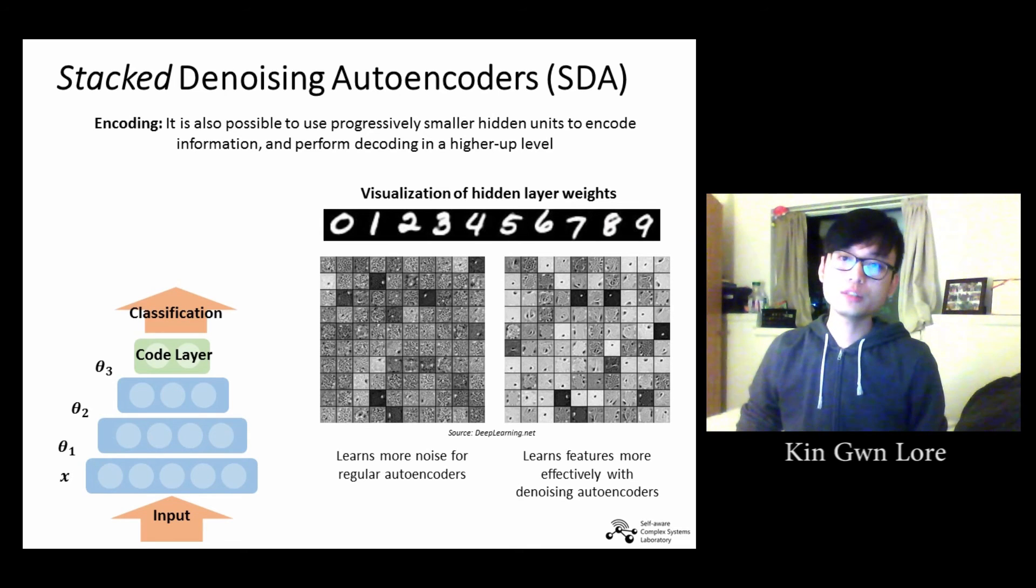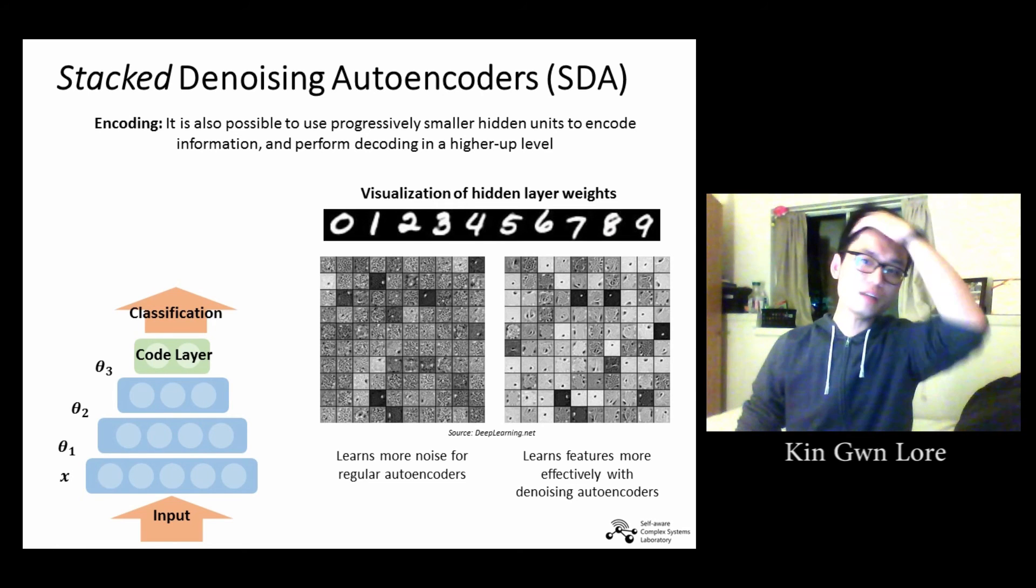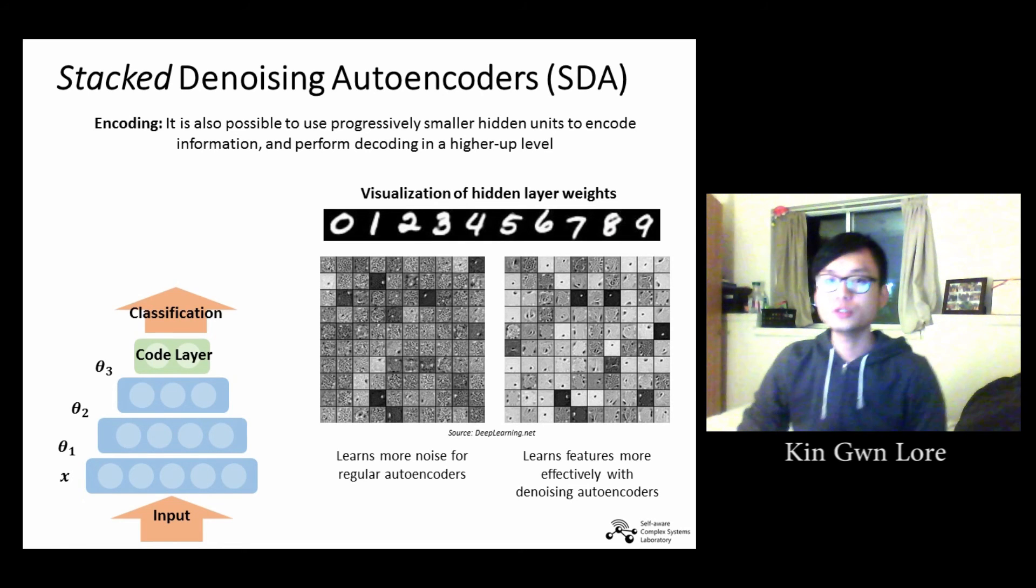This slide compares the performance between regular autoencoders with denoising autoencoders. One popular problem is to classify images of digits. When using regular autoencoders, we see that the features learned are mostly noisy. But if we were to use denoising autoencoders, the learned features become more prominent.